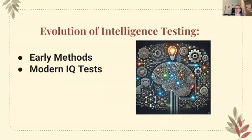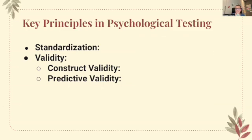Let's look at the evolution of intelligence testing. Early on, intelligence was assessed by calculating the intelligence quotient or IQ, which was the ratio of mental age to chronological age multiplied by 100. This method was intended to measure intellectual development compared to peers of the same chronological age. Modern IQ tests today are standardized and scored based on a normative sample of the population, meaning scores reflect how a test taker performs relative to others.